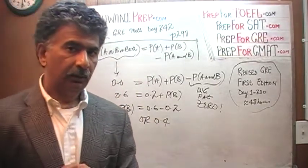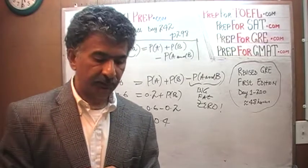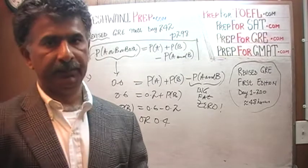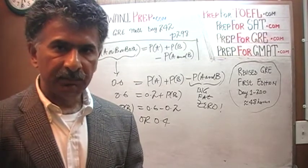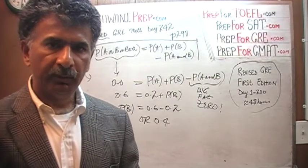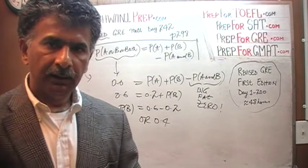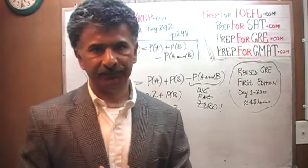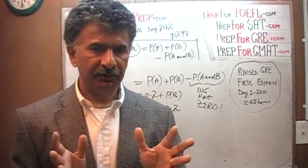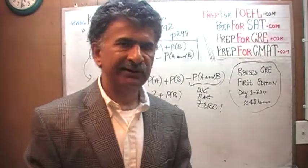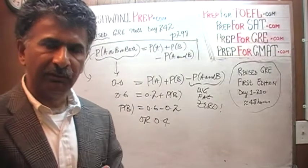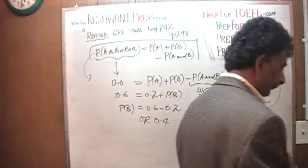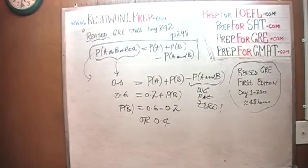In the next example, in part B, we'll deal with the situation where the two events are independent. Independent means exactly what it says: two events are said to be independent when the odds of one event happening has absolutely nothing to do with the odds of the other happening. We'll do part B in the next video since this video is getting too long already. Thank you.